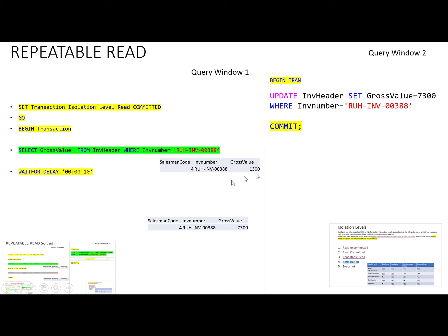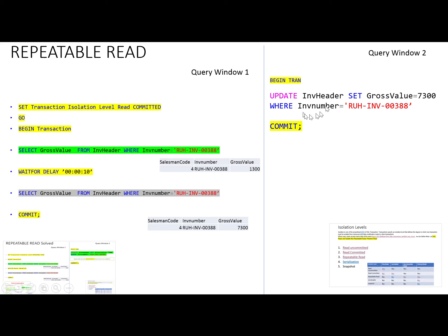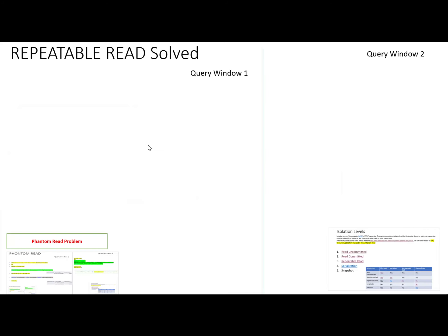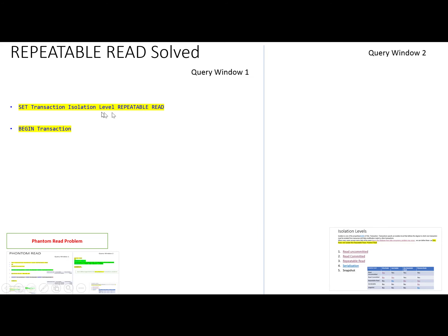The value is changed from 1300 to 7000 and committed. The original transaction is still ongoing, and when the same select query executes again within that transaction, it returns a different result — 7300 instead of 1300. This is because the read committed isolation level allows another user's committed update to be reflected between the two identical select statements, causing a non-repeatable read concurrency problem.